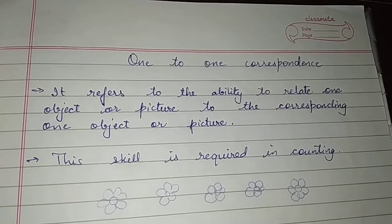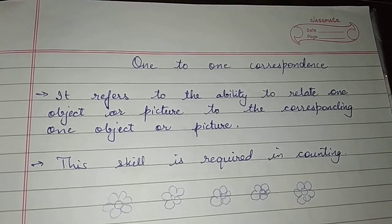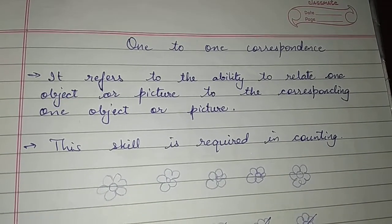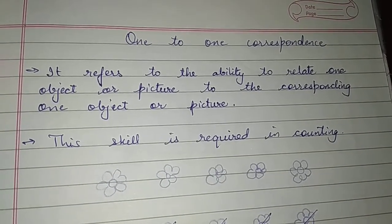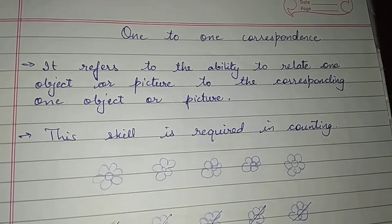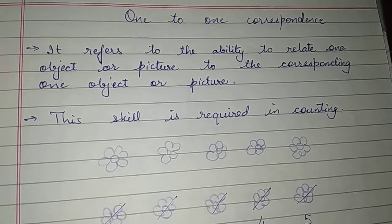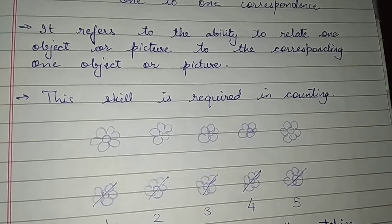Hello friends, in this video we are going to talk about one to one correspondence. It refers to the ability to relate one object or picture to the corresponding one object or picture. This skill is required in counting.